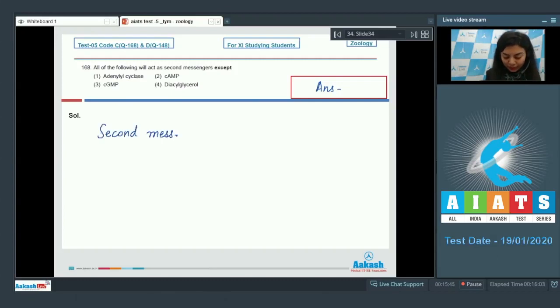Common second messengers are cyclic AMP, also called cyclic adenosine monophosphate, calcium ions can also act as second messengers, then cyclic GMP, that is cyclic guanine monophosphate, inositol, and diacylglycerol.